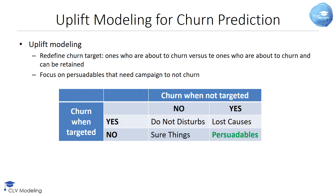Let's look at the below table. We can distinguish between four customer segments. The do-not-disturbs are the customers that will not churn if not targeted, but if targeted, feel annoyed and will churn because the marketing campaign has an adverse effect on them.